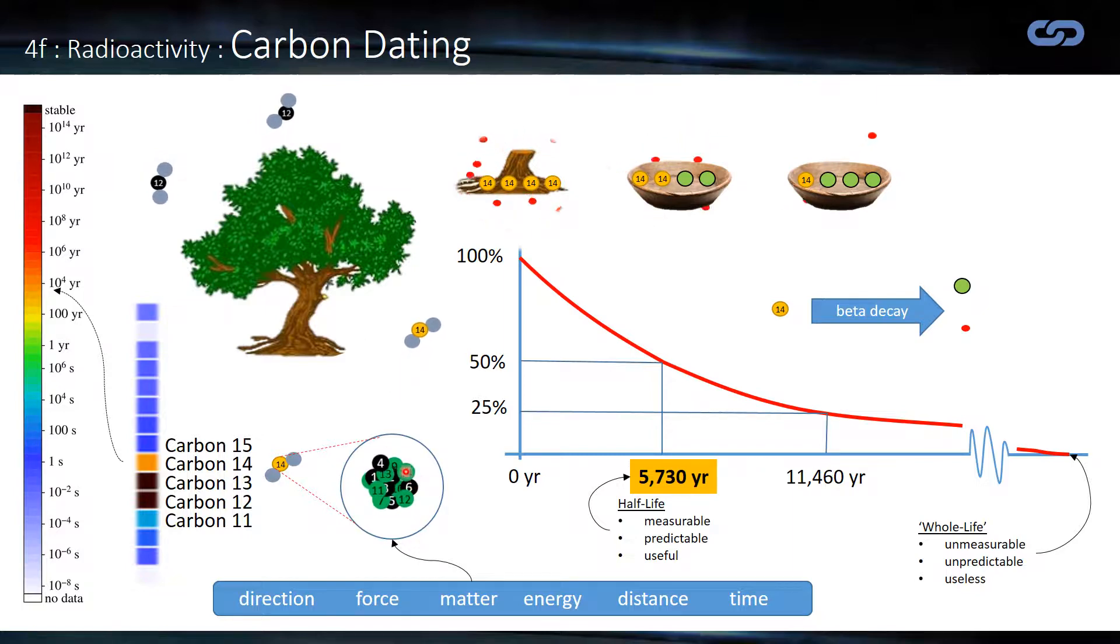It's the one we're most interested in. So carbon-12 is very stable, 13 is very stable, 15 is highly unstable. We can see here the order of hundreds of seconds. And so is carbon-11. But carbon-14 is a very conveniently intermediate case. So the half-life is 5,730 years. And we can see that here in this orangey color here.